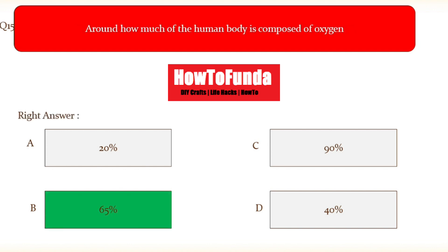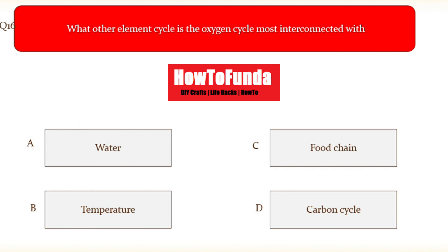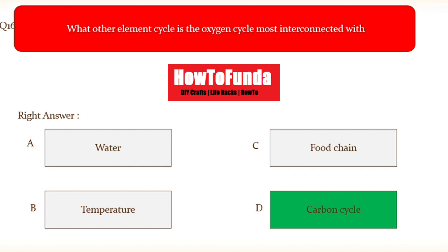Question number sixteen: what other element cycle is the oxygen cycle most interconnected with? The options are option A water, option B temperature, option C food chain, option D carbon cycle. The correct answer is the carbon cycle.